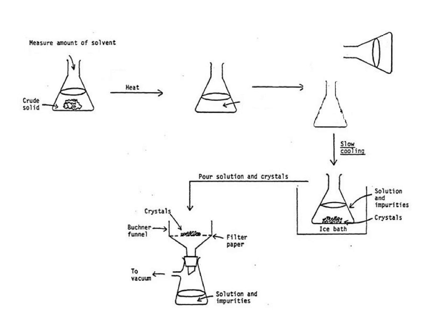First of all, we're going to dissolve it in the minimum amount of a solvent. Now I'm going to talk about how we choose that solvent later. But it says here, measure amount of solvent. You want to use the minimum amount. The solvent should also be hot. So, you keep this conical flask warm, and you keep adding solvent to it. You stir it, and eventually the solid dissolves.